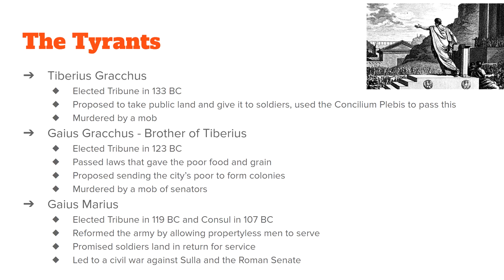Then just a couple years later, Gaius Marius — unique because he served as both a tribune and a consul — completely reformed the army. He simply decreed that men without property could now serve in the military, and any land conquered would be given to his soldiers. Because of this, soldiers in the Roman army began to be loyal to Gaius Marius only, and this led to a civil war against the Roman Senate.